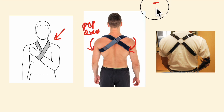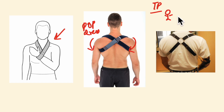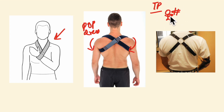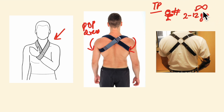Looking at the treatment plan by age: for newborns to pre-ambulatory children, symptomatic treatment is done and the arm is bound to the chest. In the ambulatory stage for children aged 2 to 12 years, figure-of-eight bandages are used. From 12 years to maturity, a commercially available figure-of-eight harness is used.